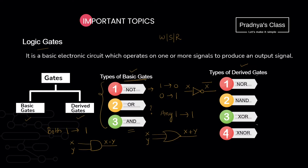Once you get these three basic gates, it will be easy for you to understand the derived gates too. If we get any question based on logic gates, you can solve it easily — explain the operation in words, draw the truth table, and draw the symbol.